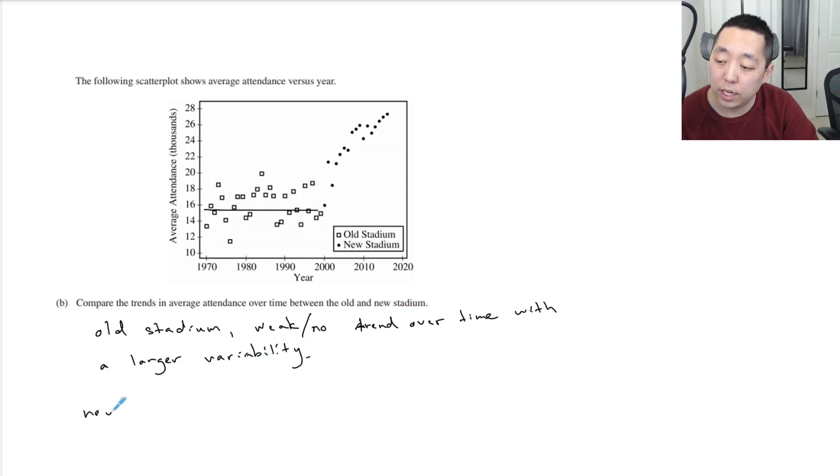The new stadium has a strong positive trend or association, and I would say it's pretty linear, positive linear trend over time. And neither has any notable outliers.